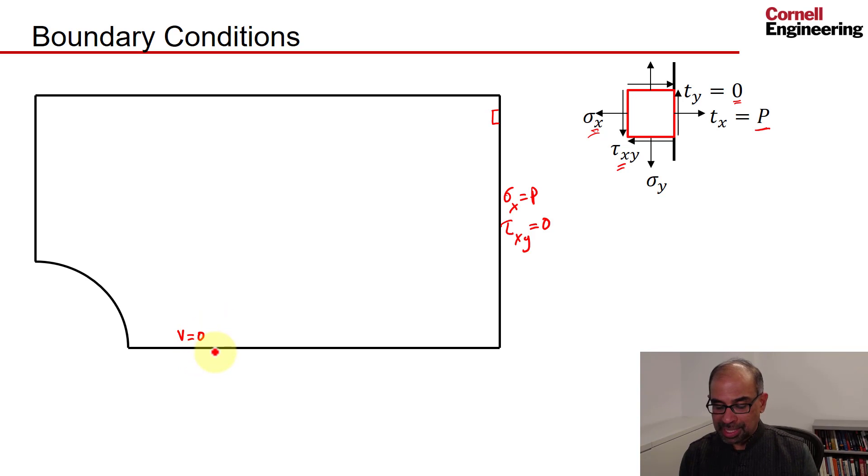And the traction in the y direction, or in the normal direction in this case, won't be zero because you need to apply some kind of force to hold that boundary there. And by the same kind of reasoning, if we consider a vanishingly small chunk of material at the bottom boundary, we can show that tau xy is equal to zero.